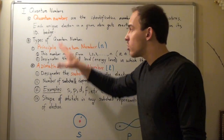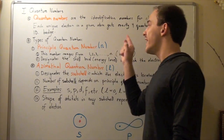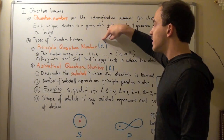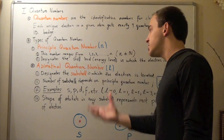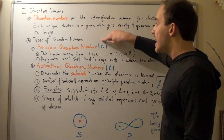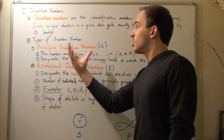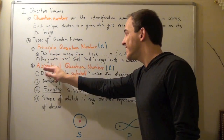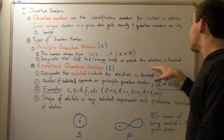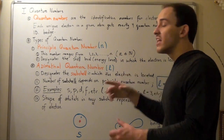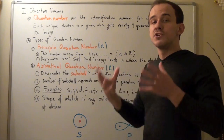Let's look at these four quantum numbers. The first quantum number is called the principal quantum number N, represented by the lower case letter N. This number begins with 1 and could be 2, 3, 4, 5 — N has to be a positive whole number. The principal quantum number designates the shell level or energy level in which the electron is located. The larger the N, the larger the size of the atom and the greater the energy.